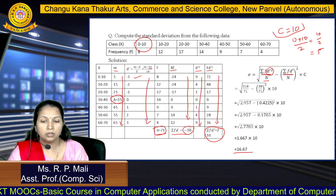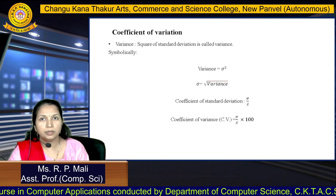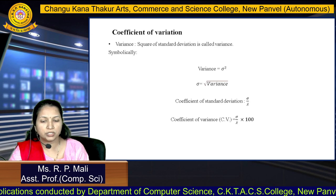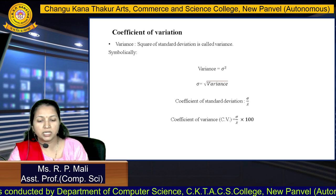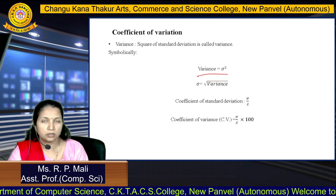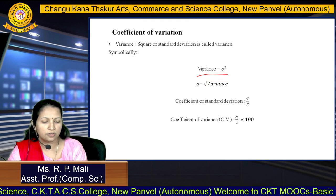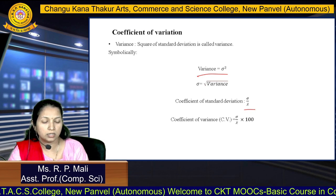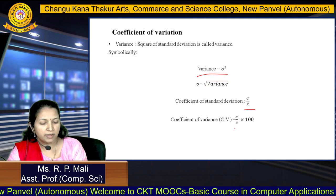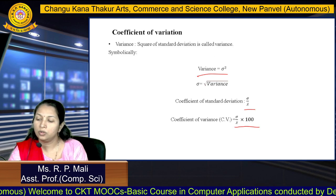I hope you understood. Now, what is variance? Variance is the square of the standard deviation. So variance equals sigma-square, and sigma equals root of variance. The coefficient of standard deviation is sigma divided by X-bar, and the coefficient of variation equals (sigma divided by X-bar) multiplied by 100.